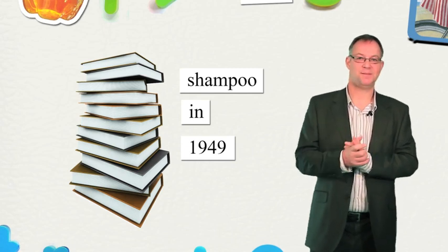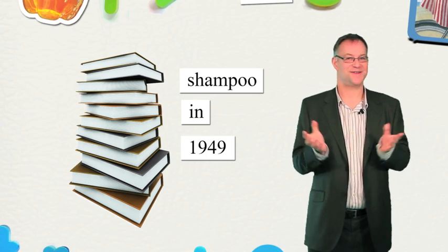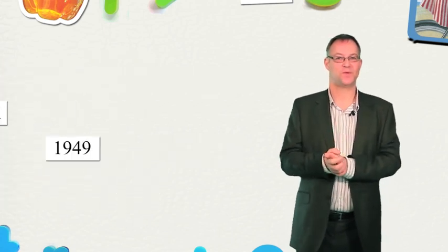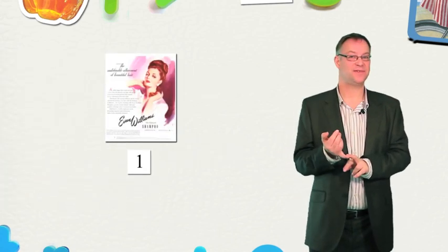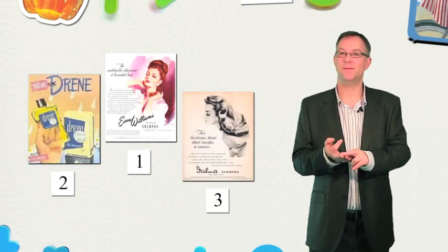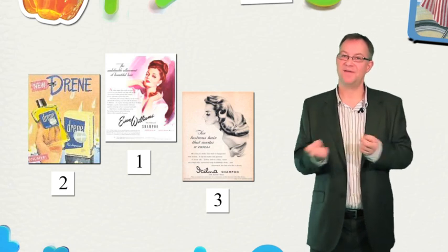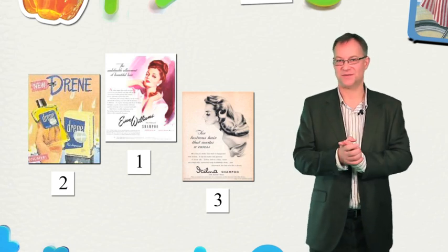So now, who can tell me three of the top-selling shampoo brands of that year? Not so easy now. Would you have guessed Evan Williams, Dreen, Ikilma? Ikilma was the brand that urged you to wash your hair every week, whether you needed it or not.